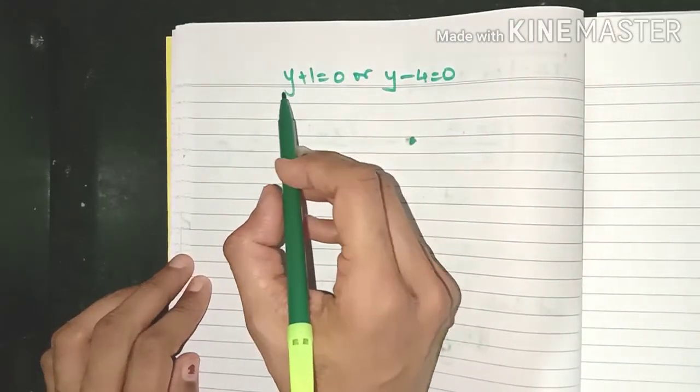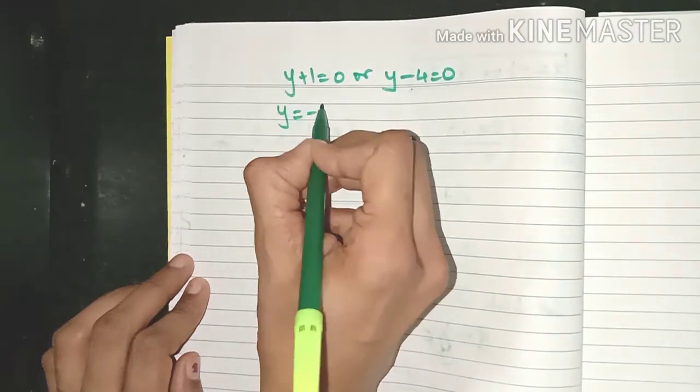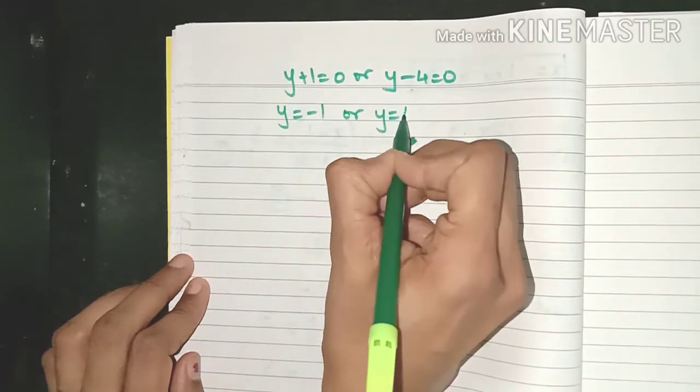So coming back to the question, we have y + 1 = 0 or y - 4 = 0, which means y is -1 or y is 4.